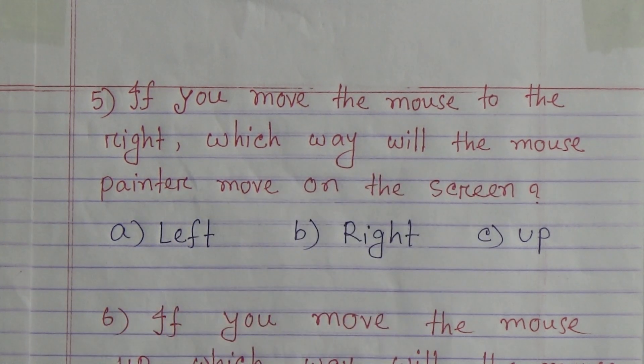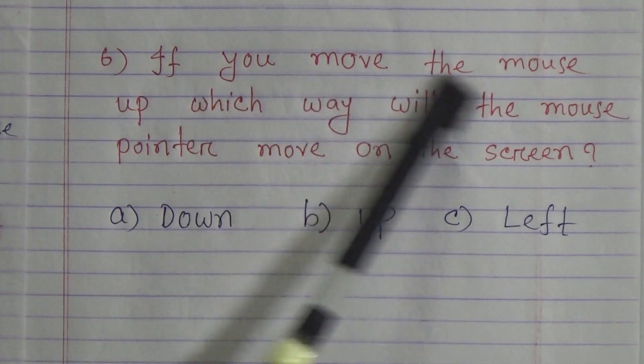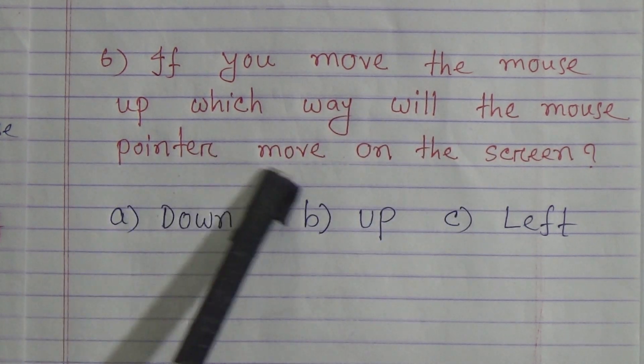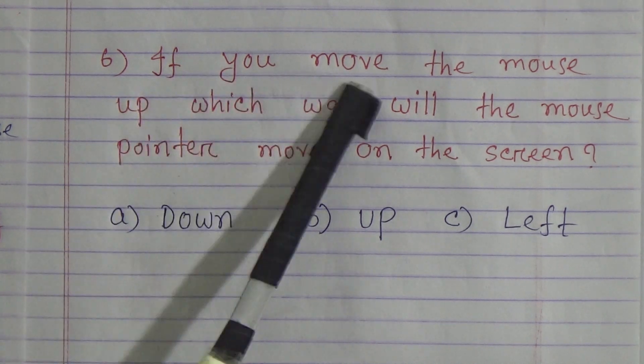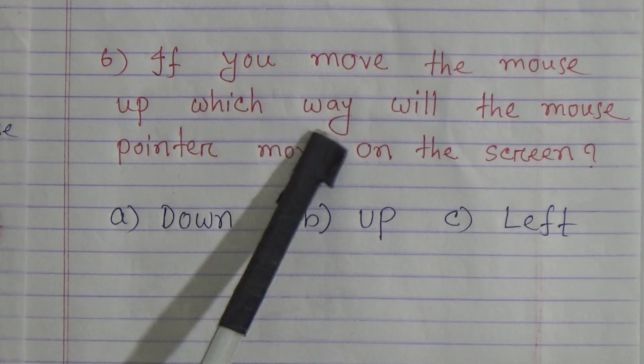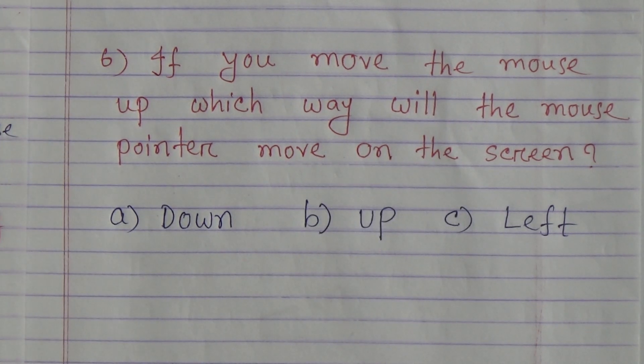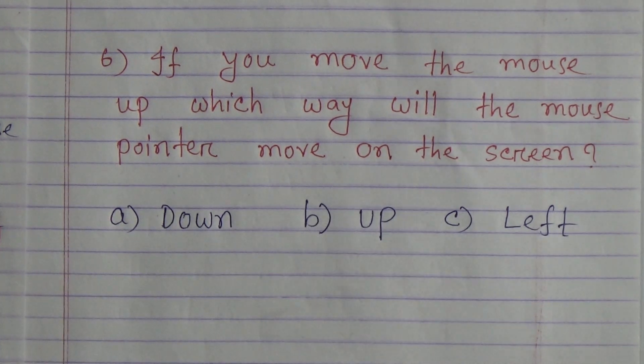If you move the mouse up, which way will the mouse pointer move on the screen? Let me repeat the question. If you move the mouse up, which way will the mouse pointer move on the screen? Option A: Down, Option B: Up, Option C: Left. Our correct option is B: Up.